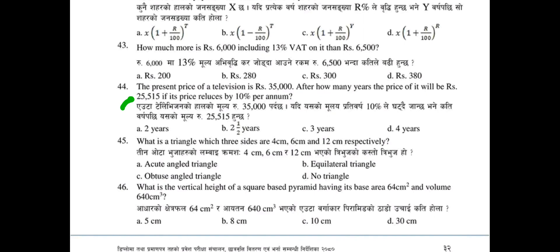Question 44: The present price of a television is rupees 35,000. After how many years will the price be rupees 25,515 if its price reduces by 10% every year? Select the correct answer from ABCD.